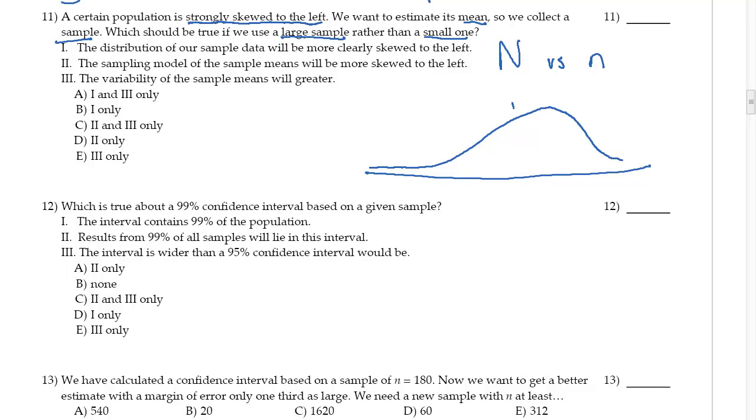Now if I actually go ahead and take a large sample, a large sample should reflect the population, so it's probably also going to be strongly skewed to the left. So the distribution of our sample data—the actual data that I collect in here—will be more clearly skewed to the left. That's going to be true. The sample is going to model the population for a large n.